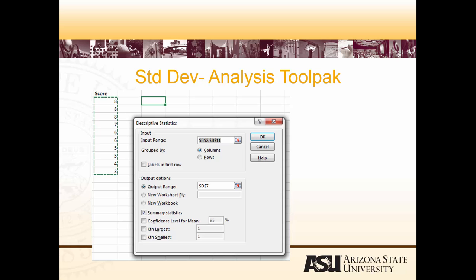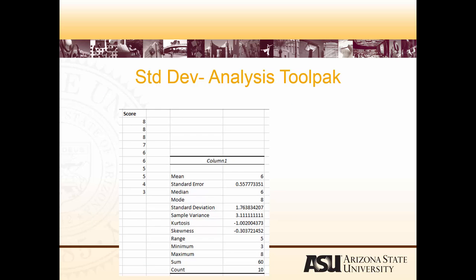You can select the data that you want — select the cells you'd like descriptive statistics on. As discussed in the previous lecture, descriptive statistics can include things such as the mean, median, mode, and measures of variability. This is what Excel gives you when you select descriptive statistics. We can see the mean is 6, a mode of 8, and a standard deviation of 1.76, as calculated previously. We can also see the range, minimum, maximum, and more.